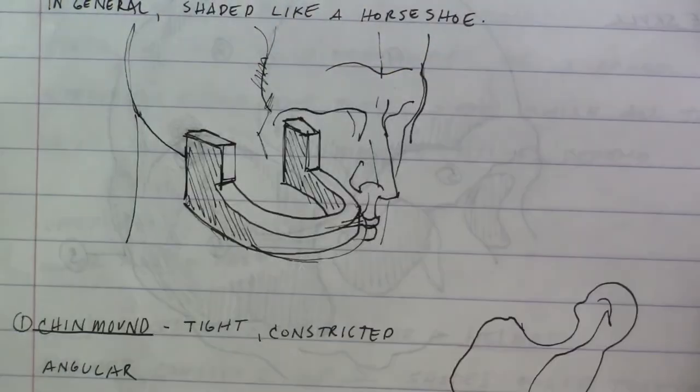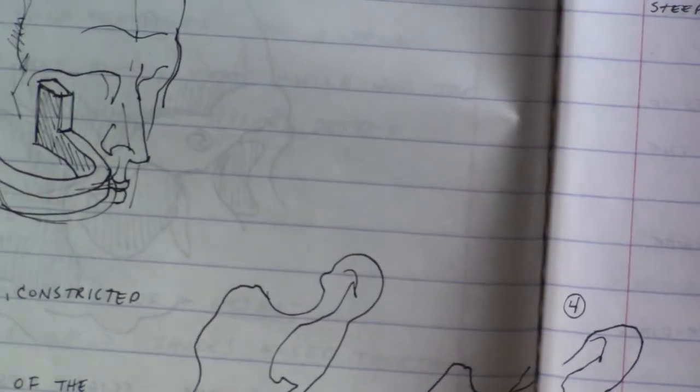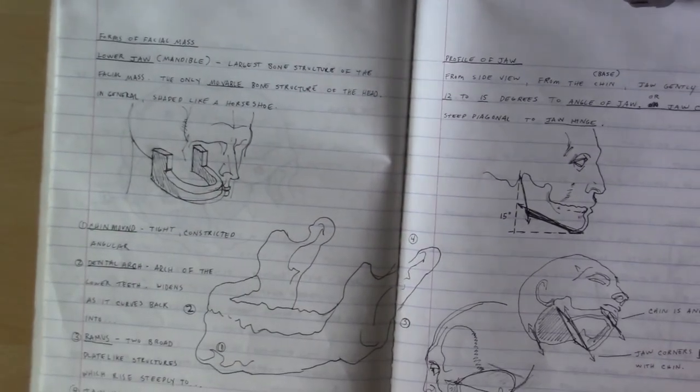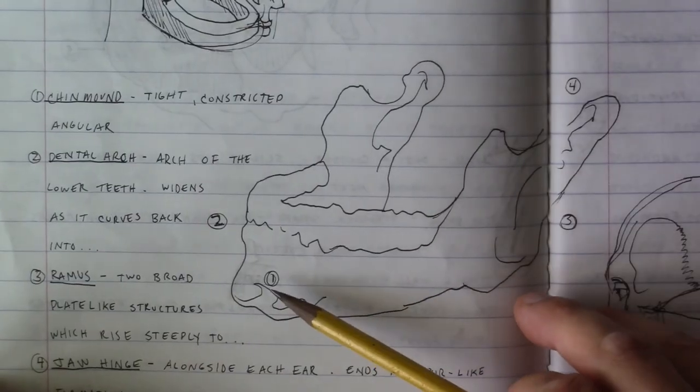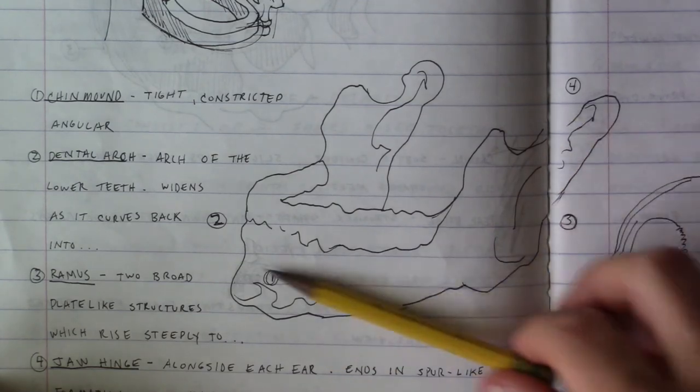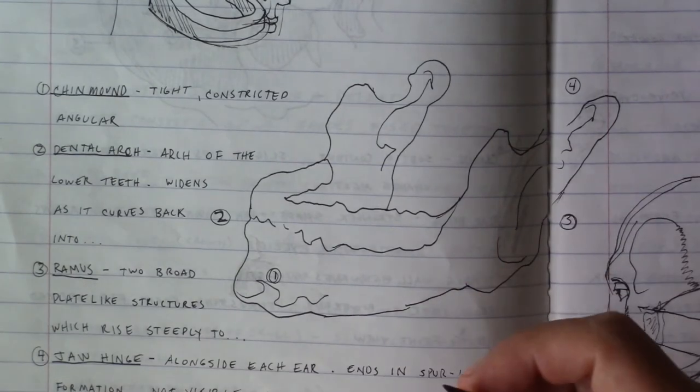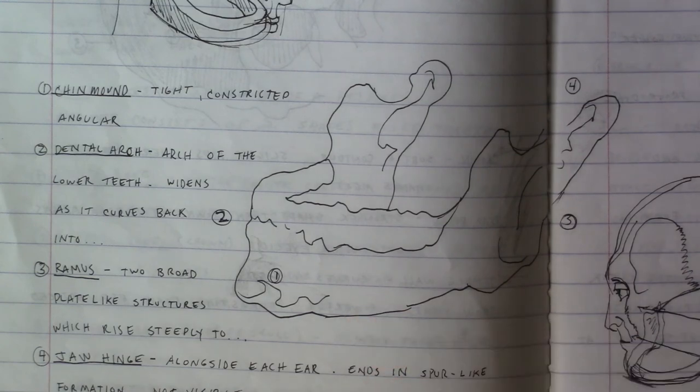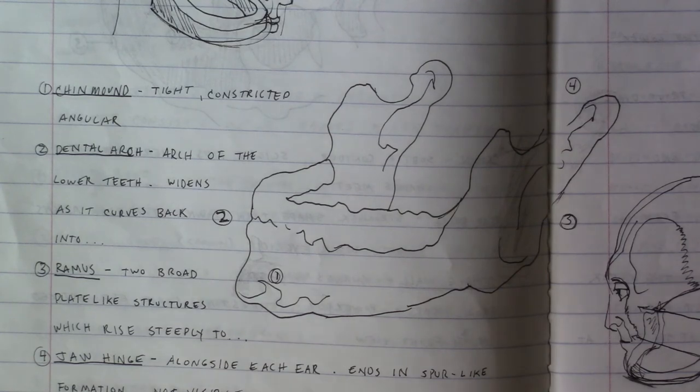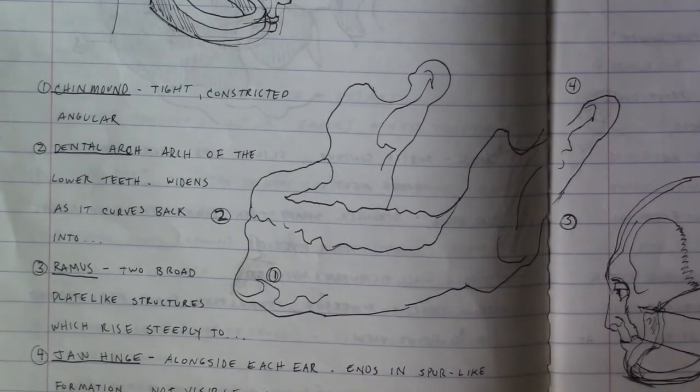We're going to break it down into four points of interest. The first one being the chin mound. I have a little diagram here drawn of the jaw. Point of interest number one, the chin mound. This is all fairly easy. Most of this is self-explanatory. If you put your fingers and feel underneath your lower set of teeth, where your lower set of teeth end, there's an indentation, and then there's a protrusion. That protrusion is your chin mound.